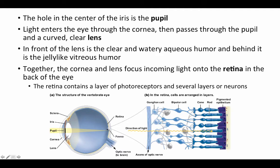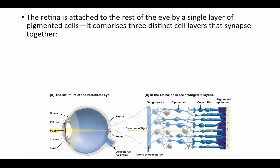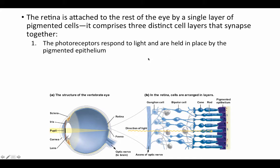The retina is the layer around the back surface of the eye. It contains a layer of photoreceptors and several layers of neurons. Here's an image of the retina in the back wall of the eye. The retina is attached to the rest of the eye by a single layer of pigmented cells — the pigmented epithelium — with the receptors poking into it. The retina itself is composed of three distinct cell layers that synapse together. First are the photoreceptors themselves: the rods and cones, which are the receptor cells that actually respond to light, held in place by the pigmented epithelium at the very back wall of the eye.